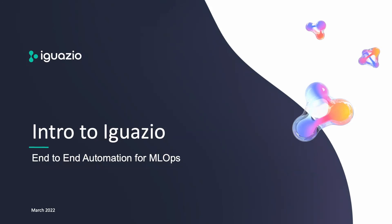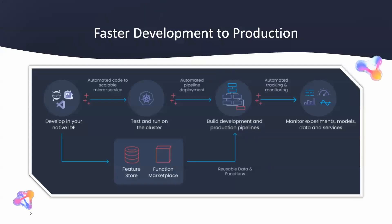Hey guys, this is Nick from Iguazio, here to give you an intro to Iguazio. We're a platform that provides end-to-end automation for MLOps and much more. From a high level, we make it faster to move from development to production. We do that by automatically creating microservices out of your code and your models that you can then run seamlessly on top of a Kubernetes cluster, all without needing to know or understand what Kubernetes is doing.